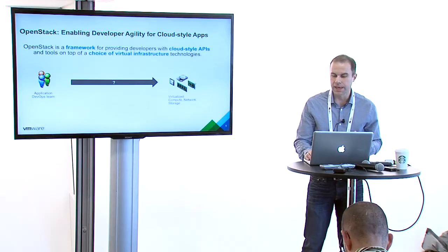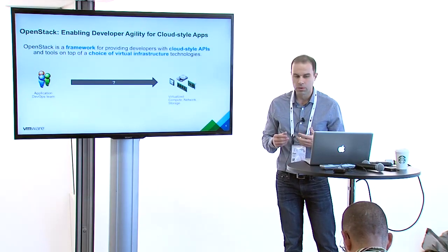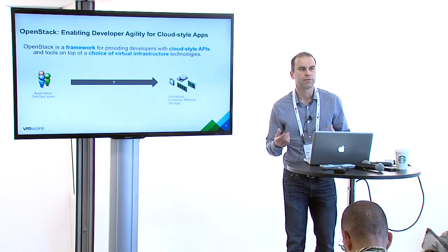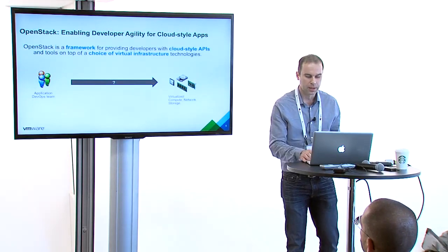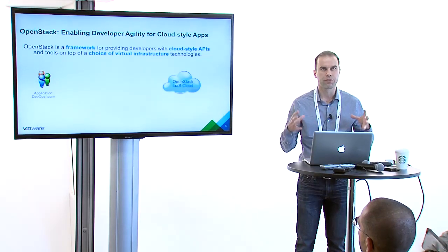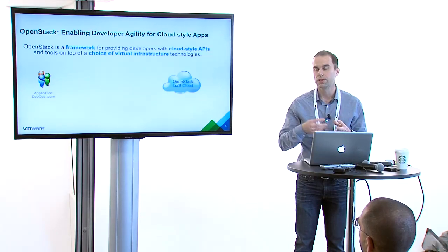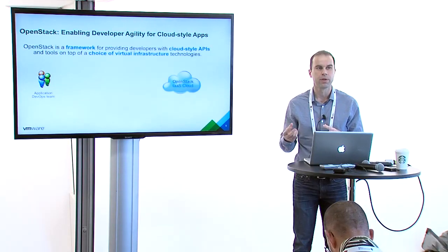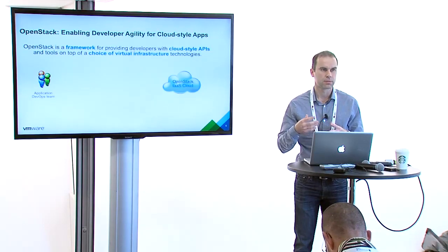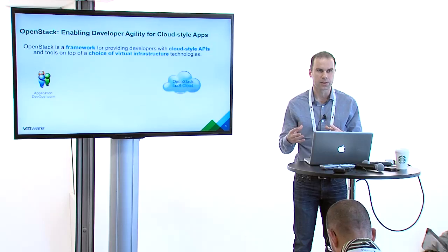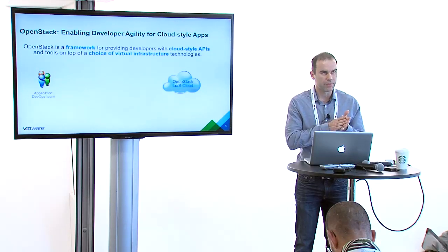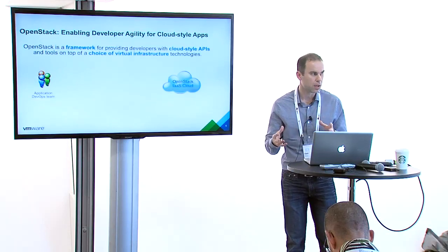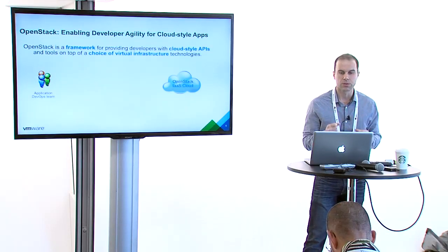When you're deploying OpenStack, you're going to have a data center with compute, storage, and networking. What you want to do with OpenStack is put a framework around that to create a cloud where you can start consuming that infrastructure in a way that has a cloud-like API. It creates an abstraction to allow a consumption API, and it takes a variety of different technologies and wraps them into a cloud.